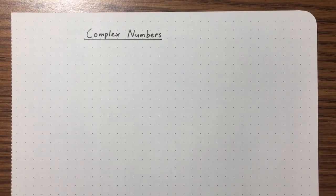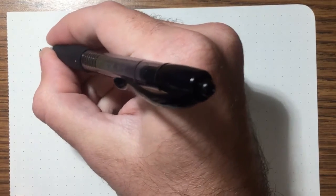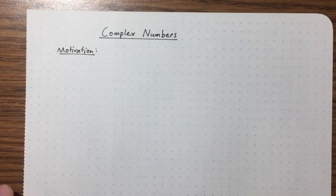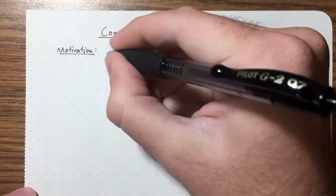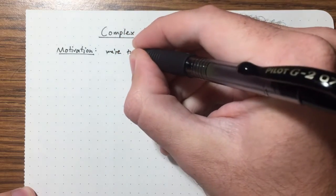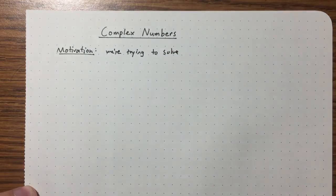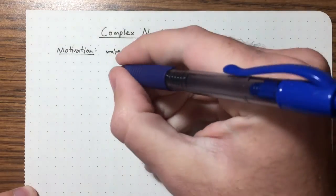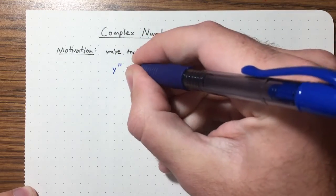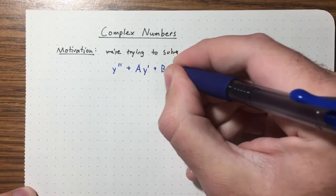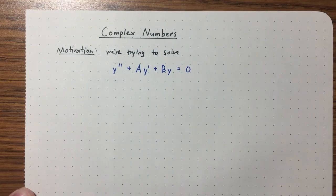In this lecture we're going to take a break from solving differential equations in order to talk about complex numbers. Our motivation comes from the previous lecture, where we were trying to solve second order linear homogeneous differential equations with constant coefficients: y'' + ay' + by = 0.